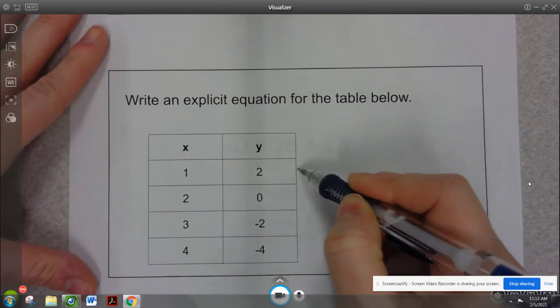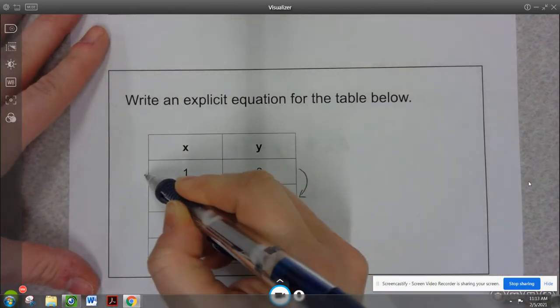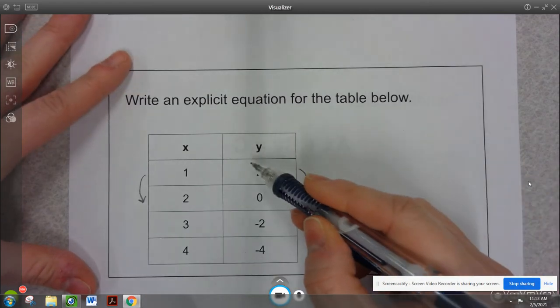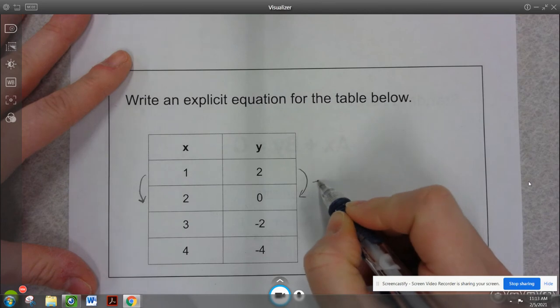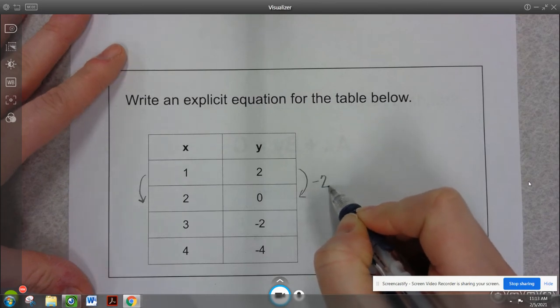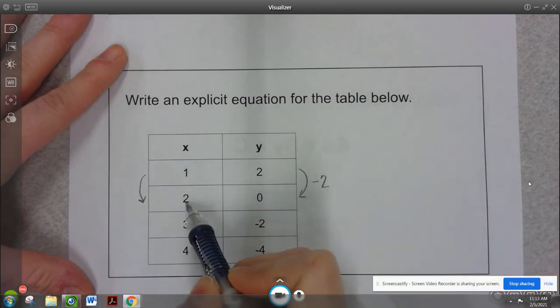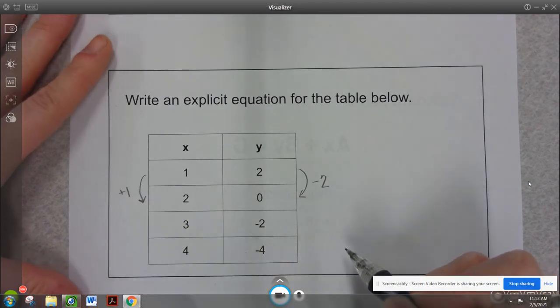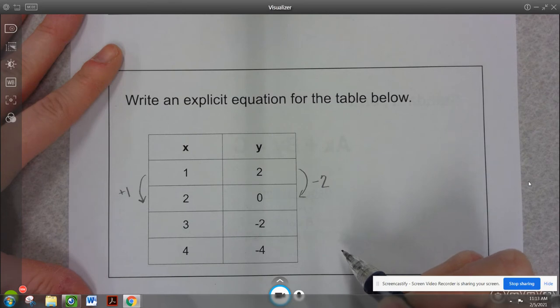So if I'm looking at the change going in our table, finding that common difference or the slope, from 2 to 0, I'm subtracting 2, and then from 1 to 2, I'm adding 1. So that makes our slope or our common difference negative 2 over 1, which is the same as just saying negative 2.